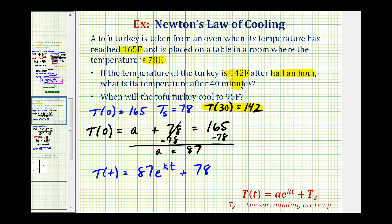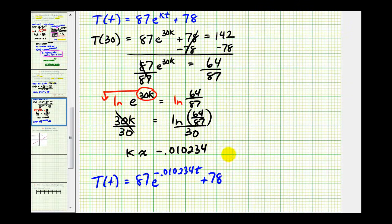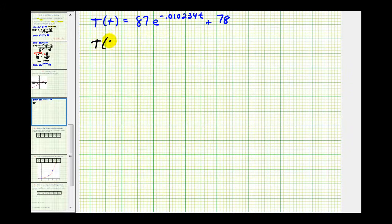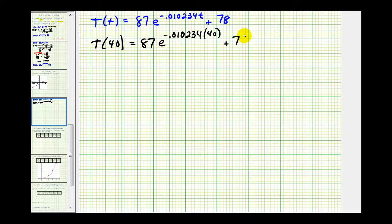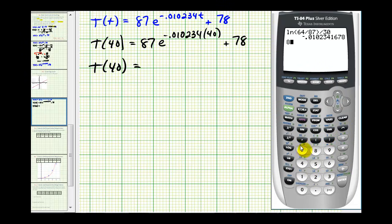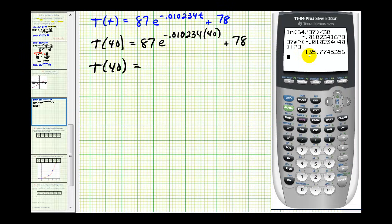So now to determine the temperature at 40 minutes, we need to evaluate T of 40. We'll substitute 40 for t, so we have 87 times e to the power of negative 0.010234 times 40, plus 78. We'll go back to the calculator, and after 40 minutes, the temperature is approximately 135.8 degrees.